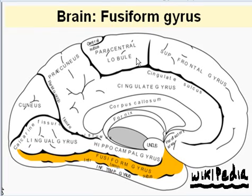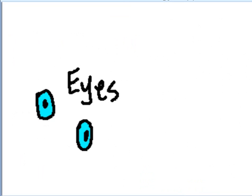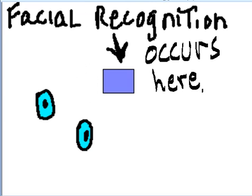Capgras delusion. Here's the brain and here's the fusiform gyrus. Picture from Wikipedia. Let's abstract for a moment. Here are your eyes. The fusiform gyrus, facial recognition occurs here.